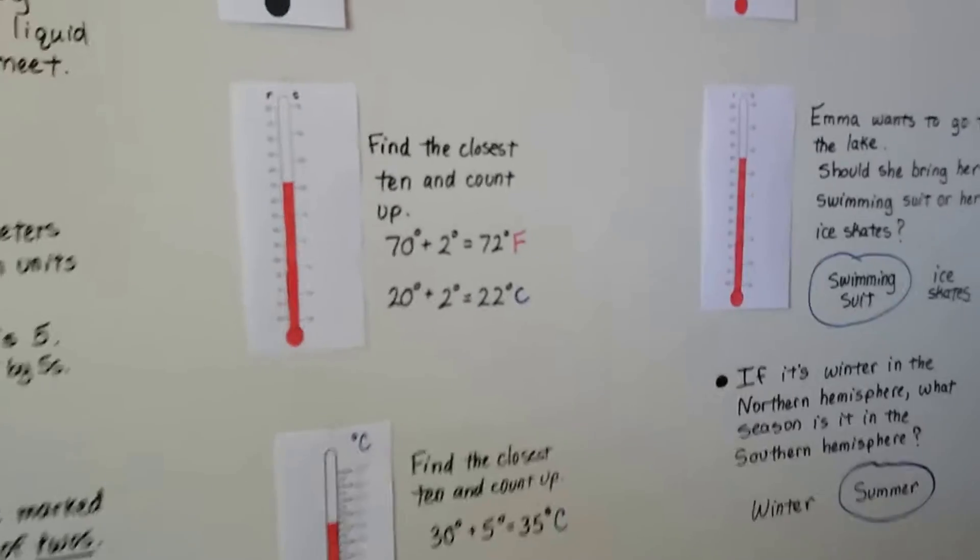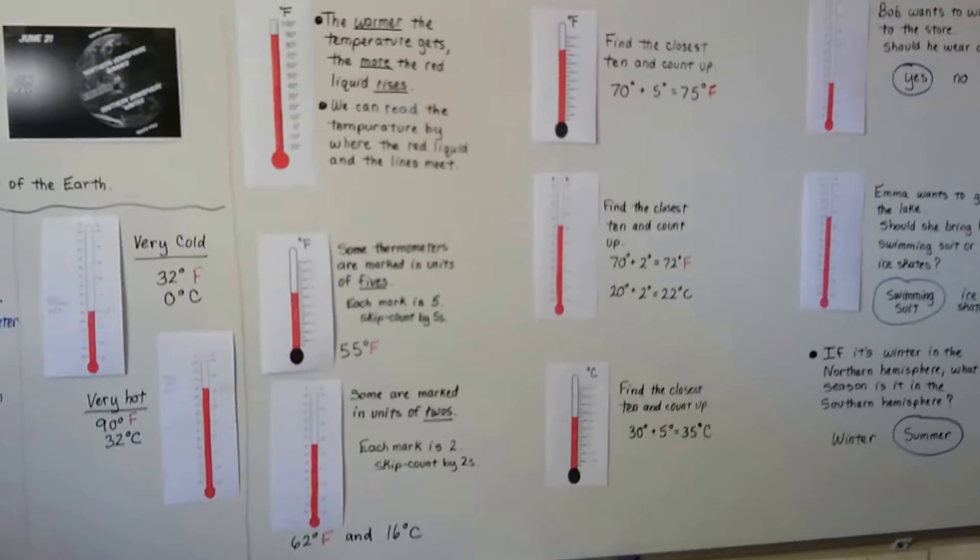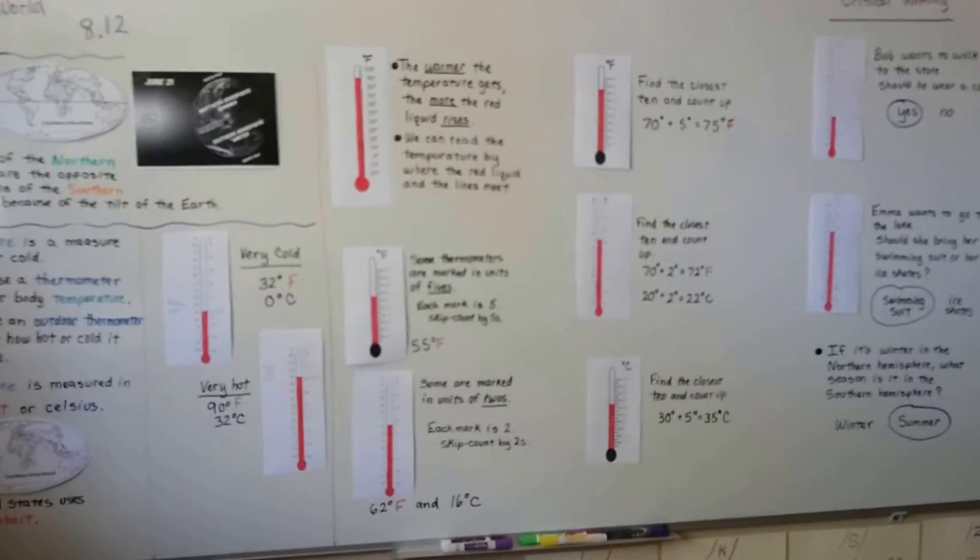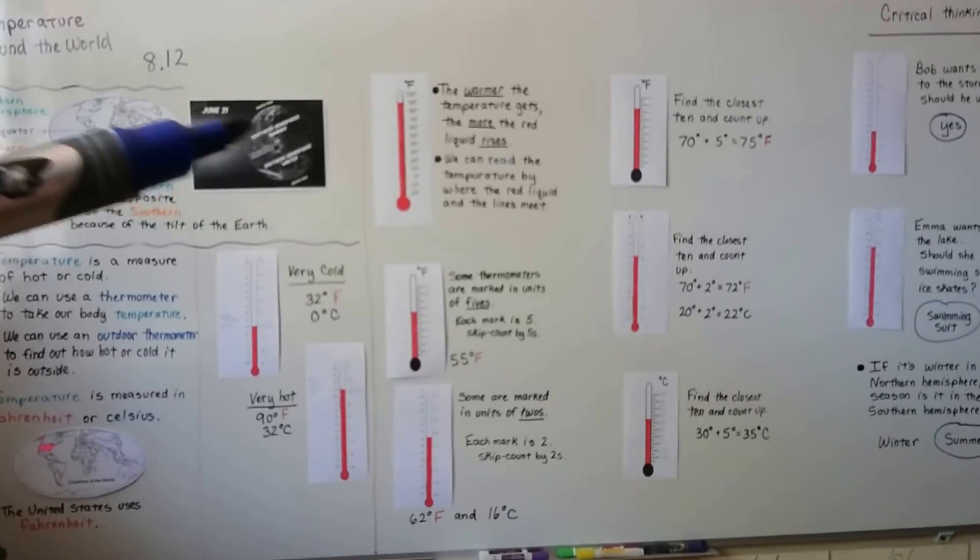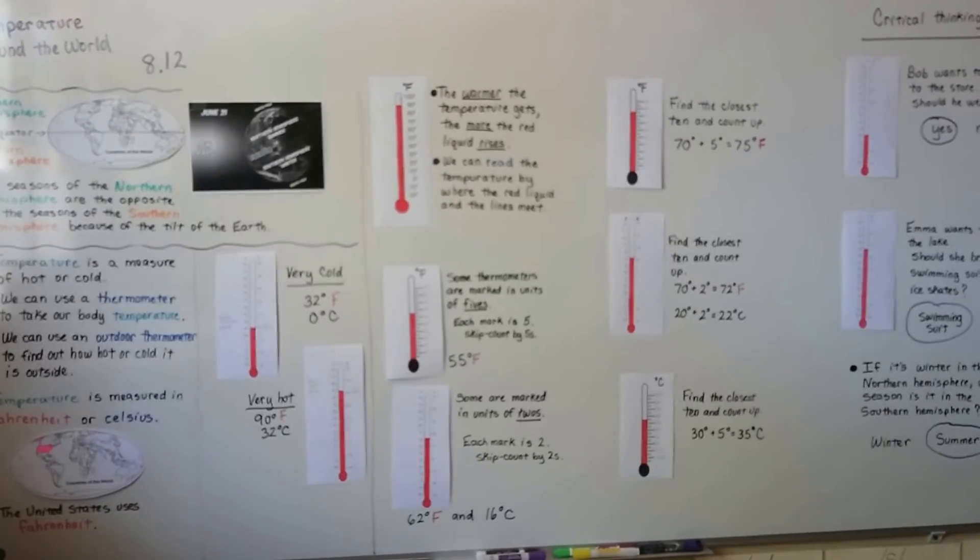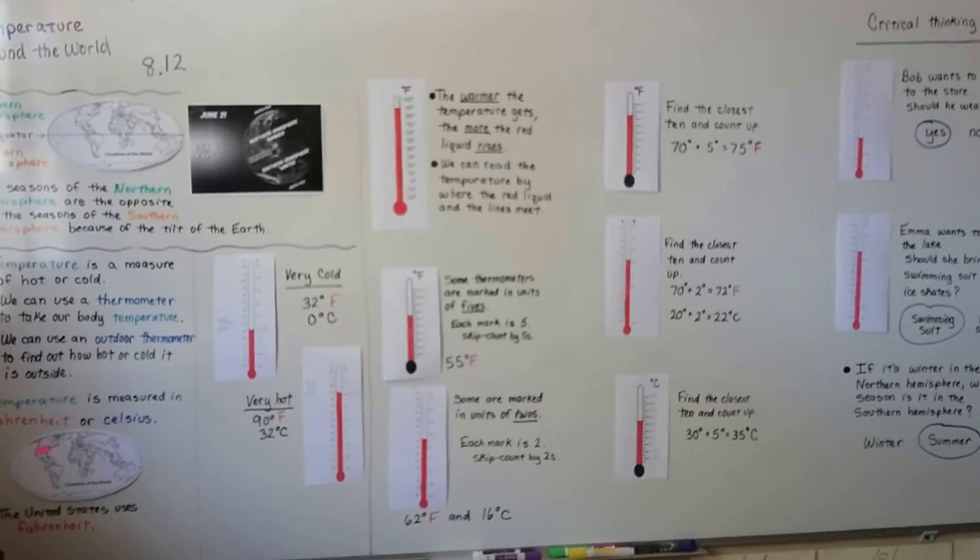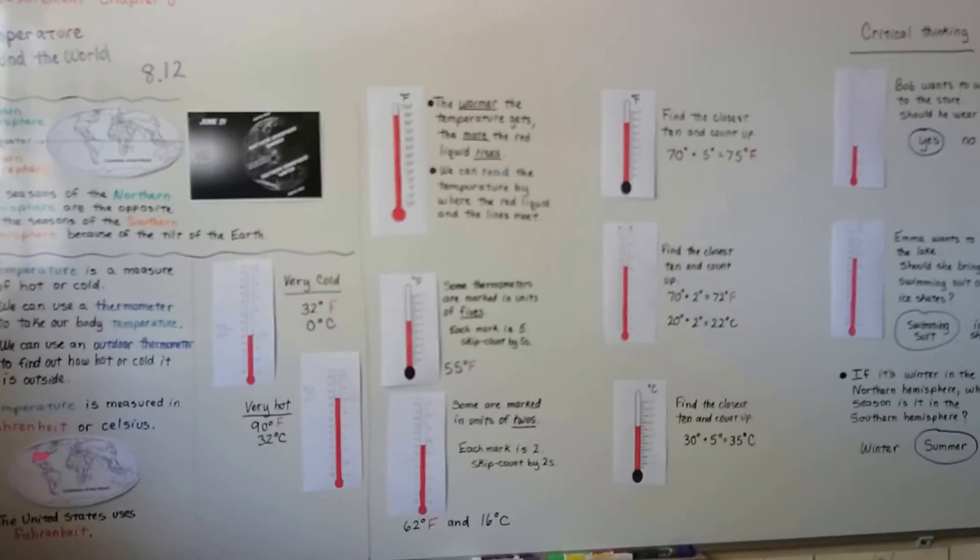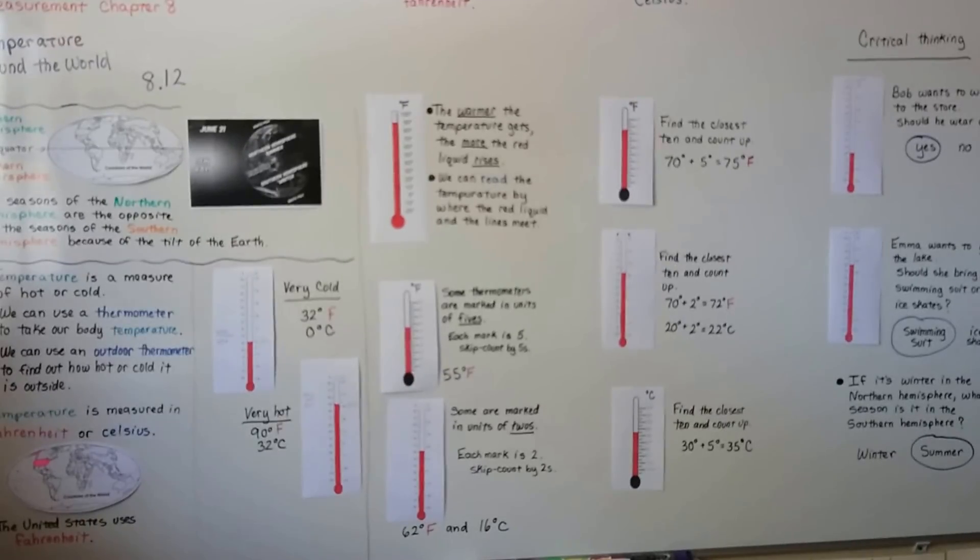When the leaves are falling off the trees for us, they're having springtime and their flowers are just starting to grow. Isn't that weird how they're opposites and how the sun hits the earth and makes it opposite? All right? We're going to continue talking about measurement, and I hope you're doing well, and I hope this helped, and I'll see you in the next video. Bye!